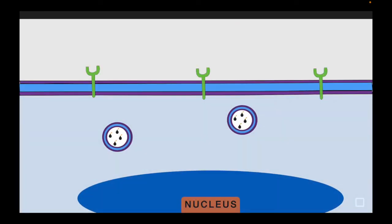You can see the entire cycle: rolling, adhesion (pavementing), transmigration, chemotaxis, and finally phagocytosis. Phagocytosis involves several steps: recognition and attachment of the organism by the cell, engulfment of the organism by the inflammatory cell, and finally killing or degradation of the microorganism. The receptors on the cell surface are the macrophage mannose receptor or macrophage scavenger receptor — the green color receptors shown — which are lectins that bind to terminal mannose or fucose residues more common in microbes, helping inflammatory cells identify them.